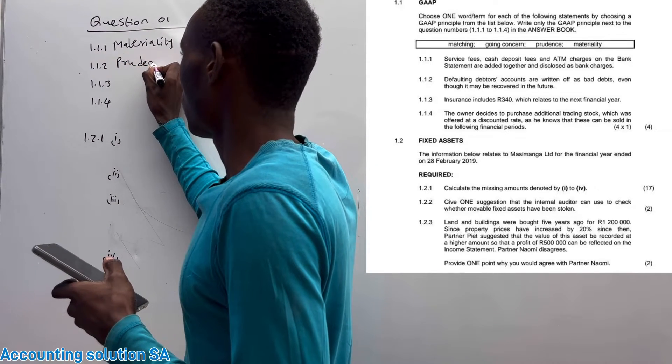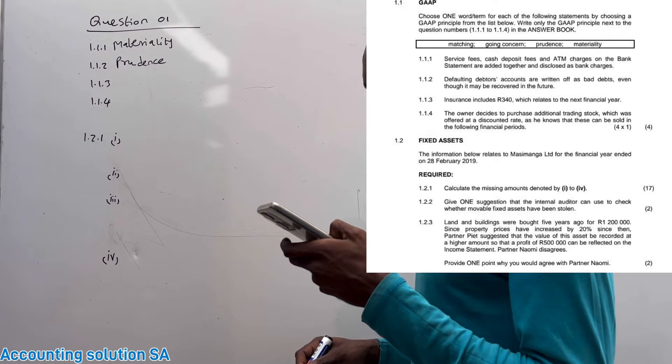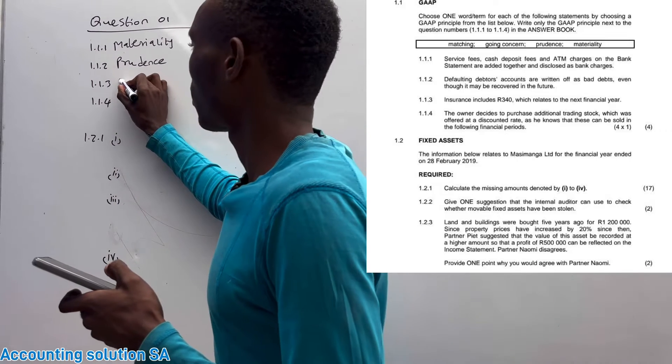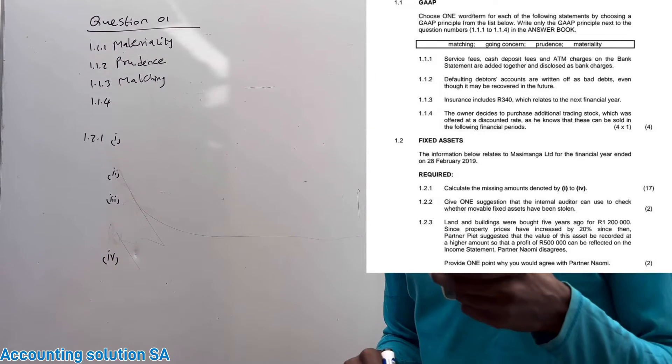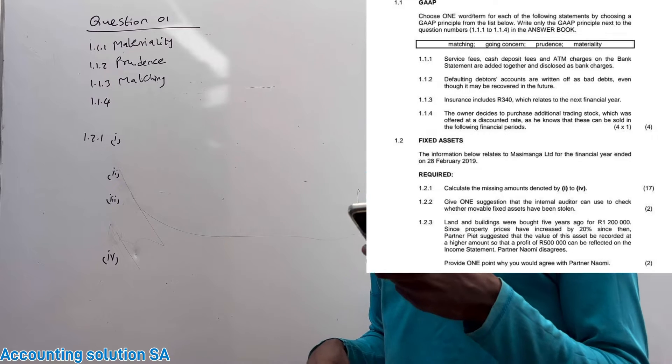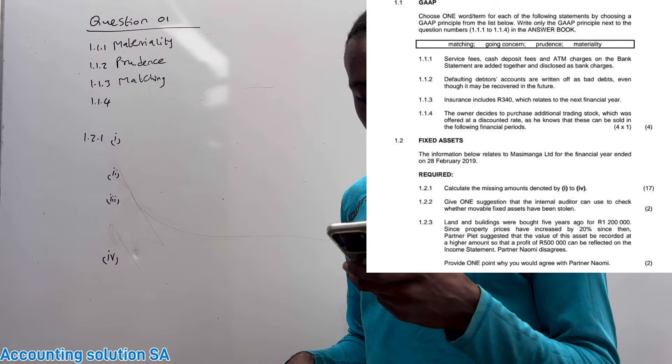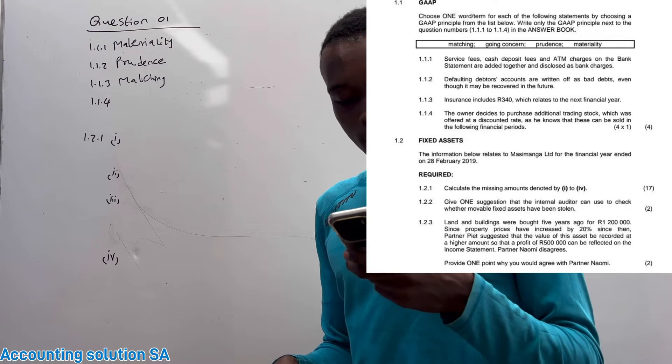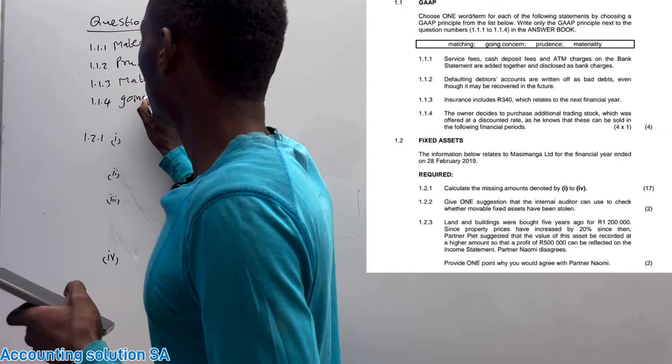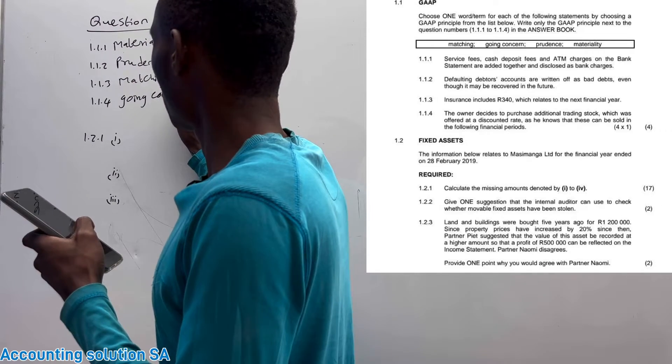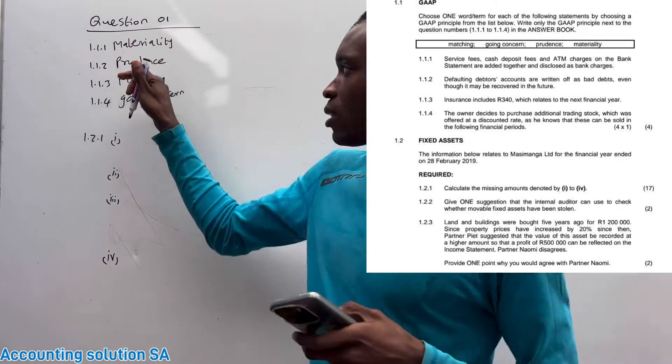Question 1.1.3: Insurance includes R340 which is related to next financial year. It's matching concept. The last one obviously is going to be going concern. The owner decided to put additional stock which was offered at a discount rate as he knew that this can be sold in the following financial period. You need to revise these GAP principles and other GAP principles that are not there.